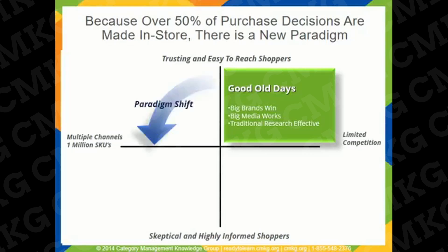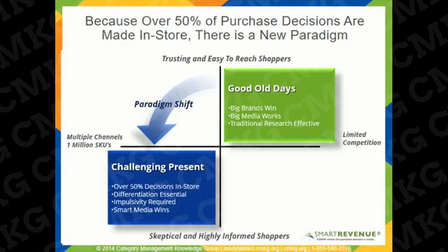But now there's been a paradigm shift, driven by the multiple and blurring channels, over 1 million SKUs in the industry, and much more sophisticated retailers. The big challenge for retailers and vendors is to determine how to influence that 50% of decisions made in store, and how to capitalize on impulsivity through strategic in-store influences.